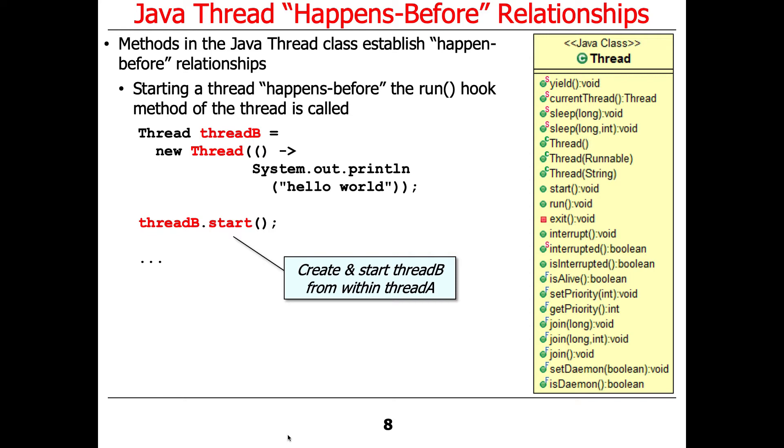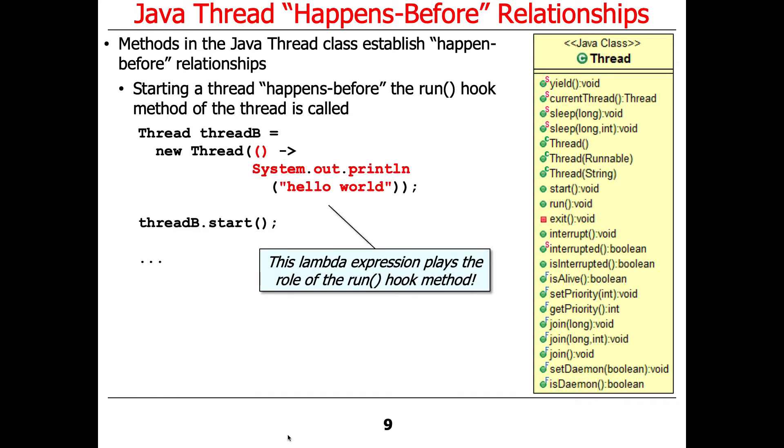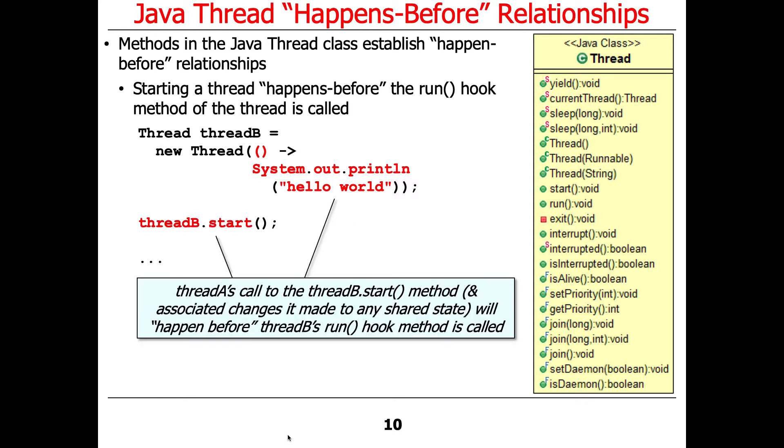We start this, so we create thread B, we start thread B from within thread A, and this is the run hook method that gets called. The point here is that the call to the start method and any changes that may make to the shared state will happen before and complete the initialization before the run hook method is called.